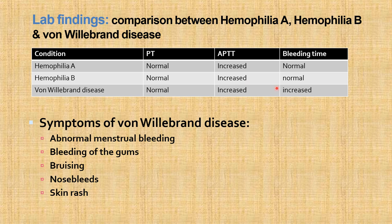Comparing hemophilia A, B, and von Willebrand disease using platelet function tests: in von Willebrand disease, both APTT and bleeding time are increased, whereas in hemophilia A and B only APTT is increased. Symptoms of von Willebrand disease include abnormal menstrual bleeding, bleeding of gums, bruising, nose bleeds, and skin rash.